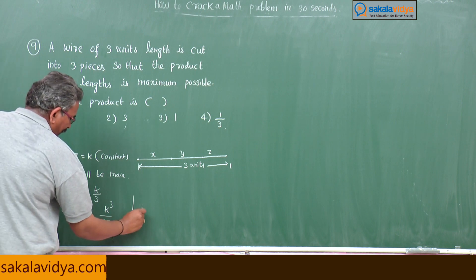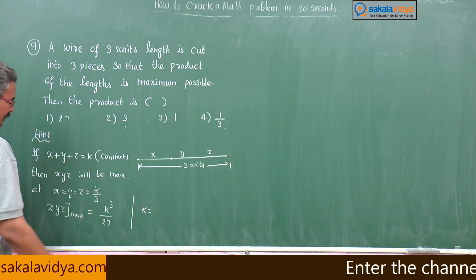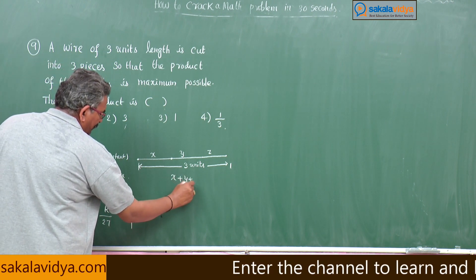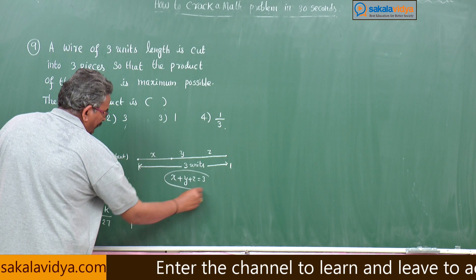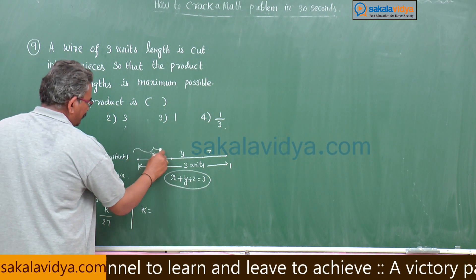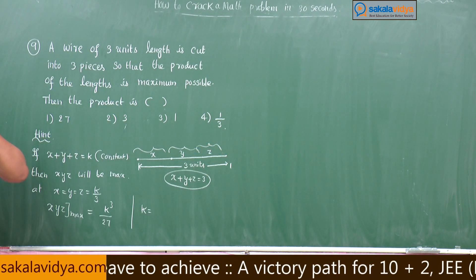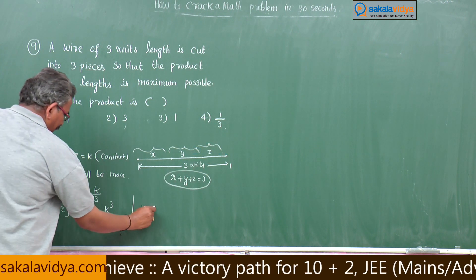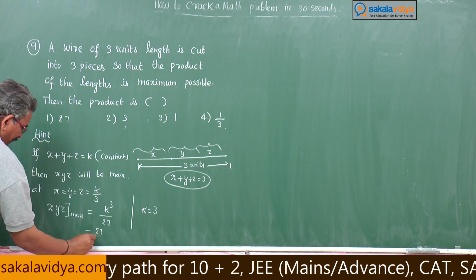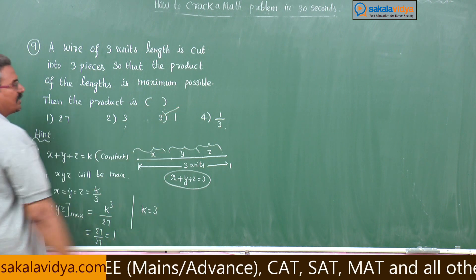Here k stands for three units, so x plus y plus z equals 3. Substituting k equals 3: k cubed by 27 equals 27 by 27, which gives 1. So the third option is the right answer.